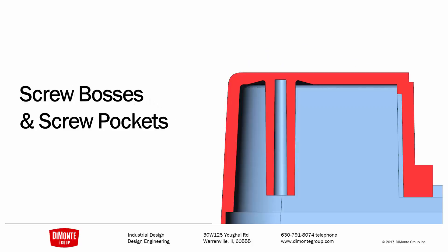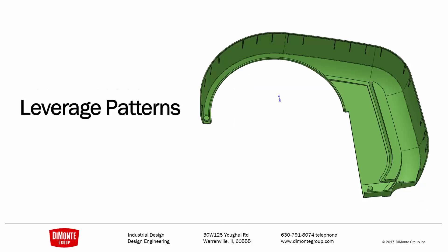We'll be moving on to taking a look at some strategies for screw bosses and screw pockets that will help minimize sink on your plastic parts, which is an unsightly cosmetic defect. We'll also be looking at speeding up the modeling process by leveraging patterns. Patterns are a great way of quickly creating repetitive geometry in plastic parts.